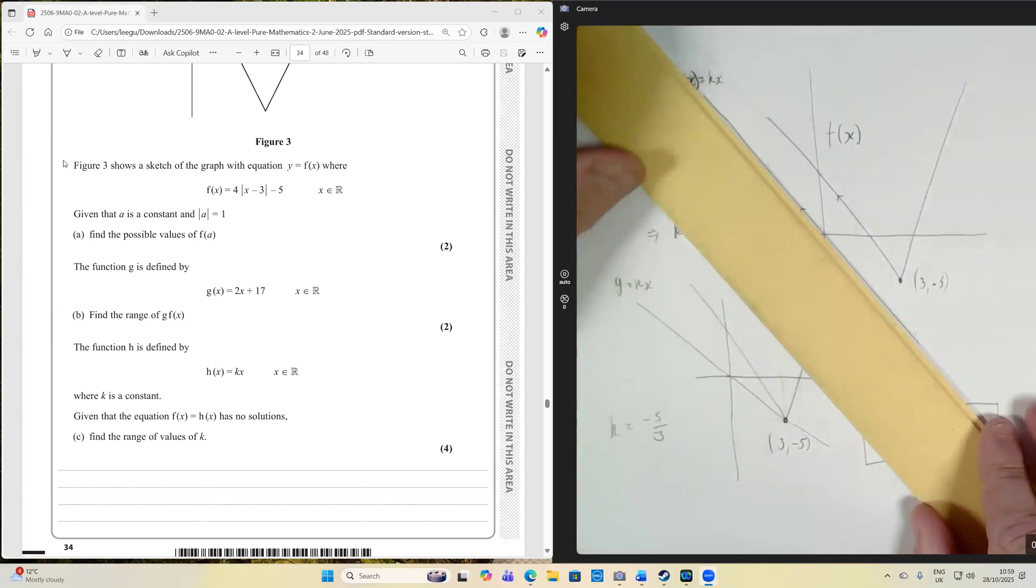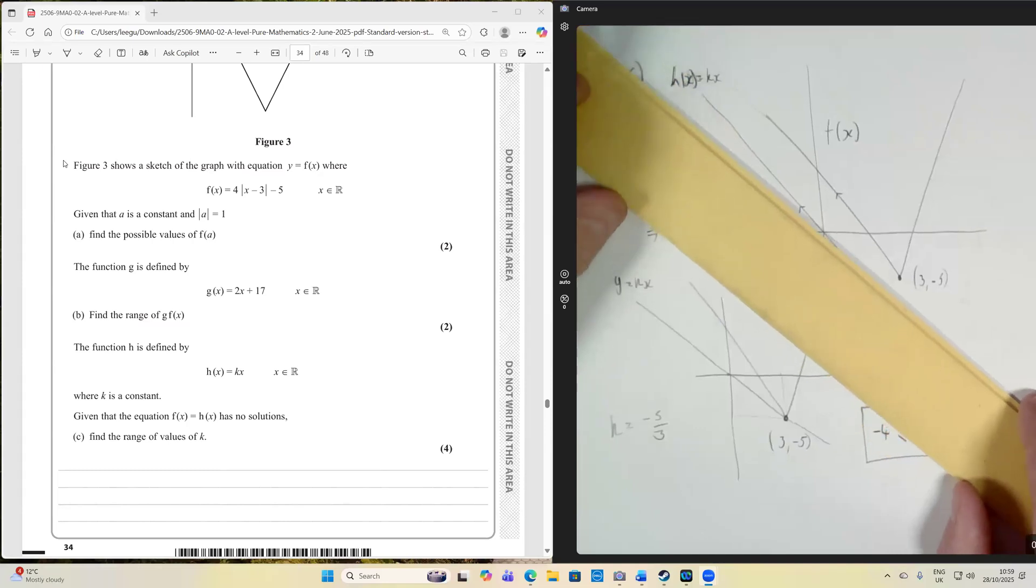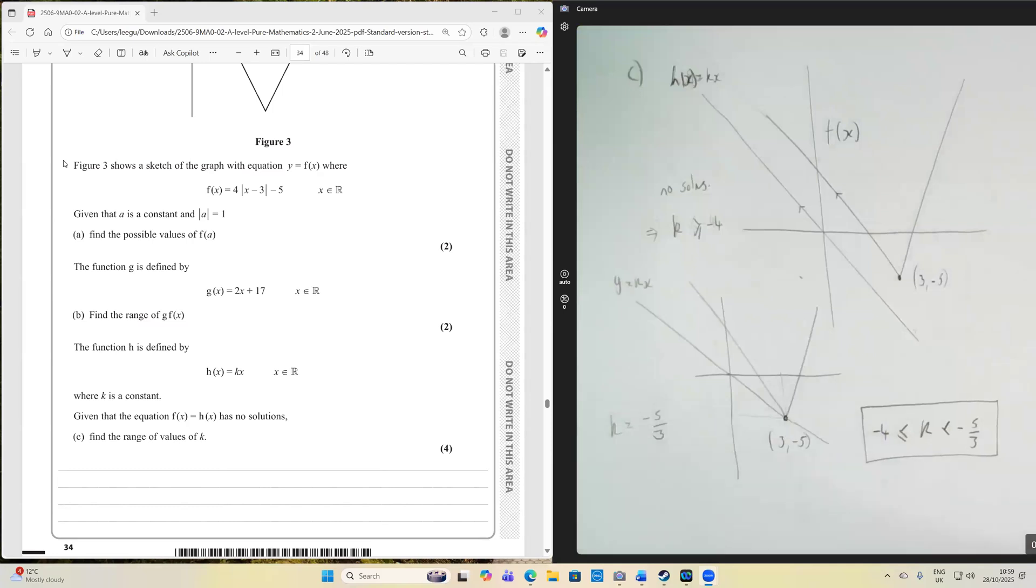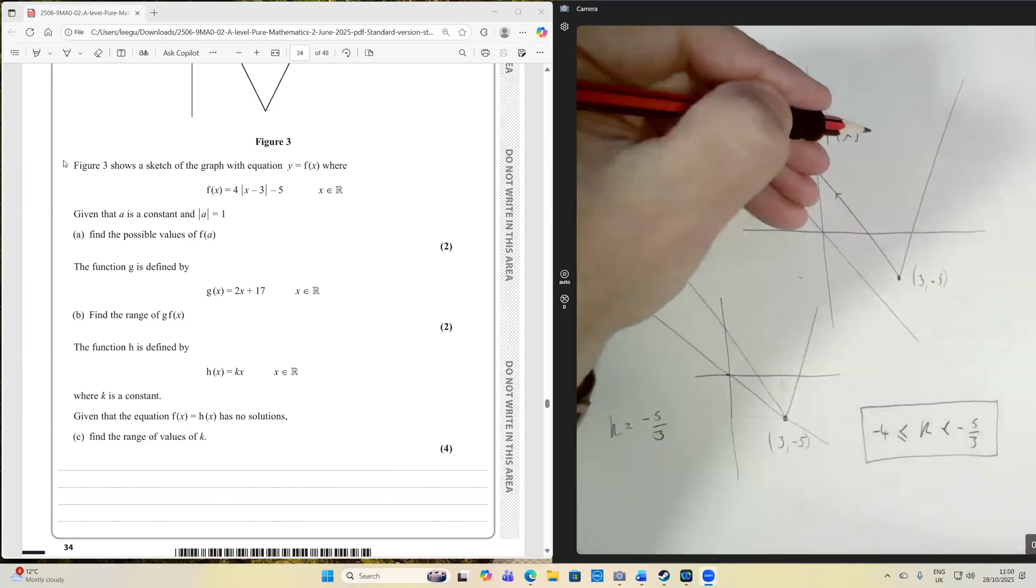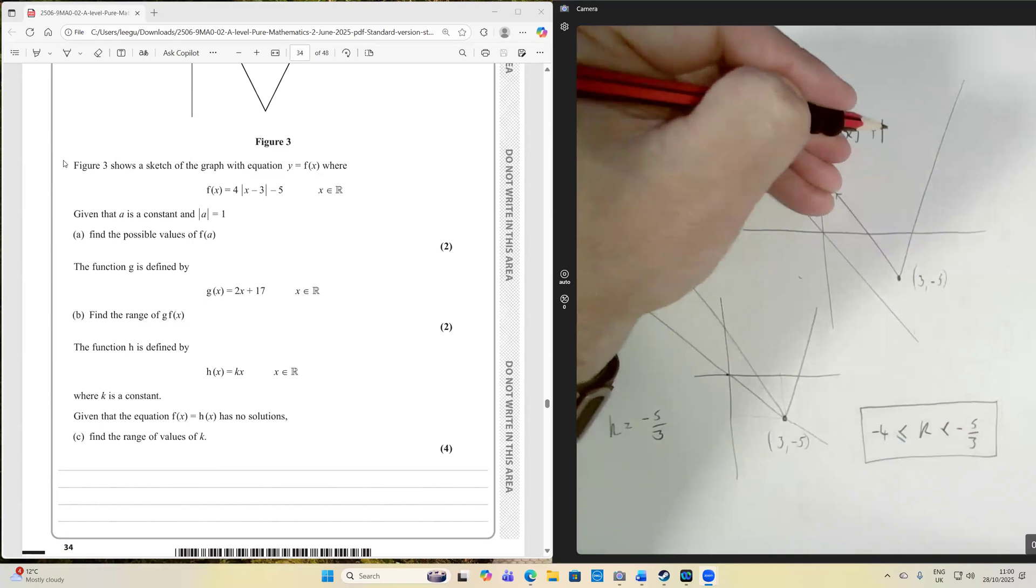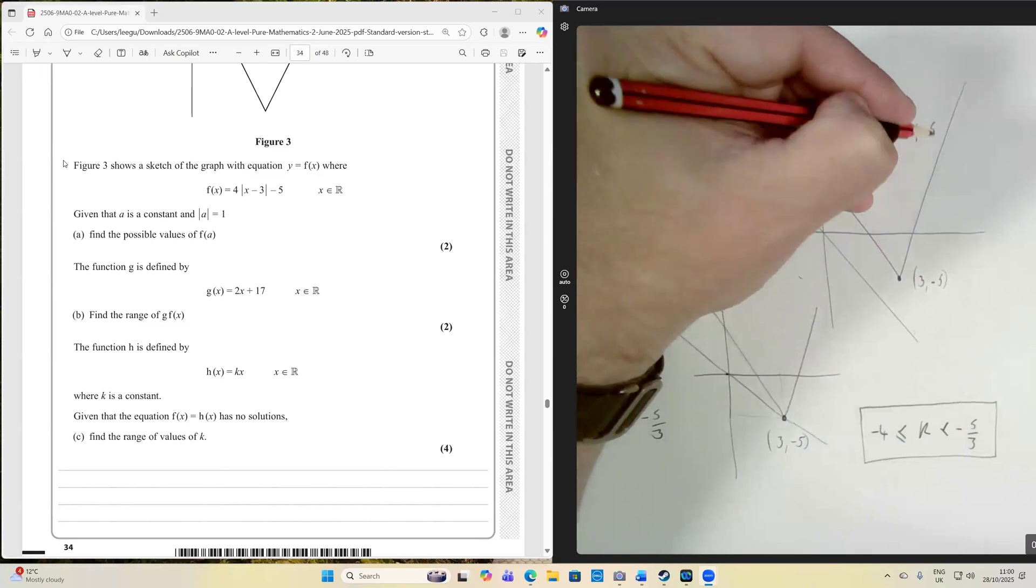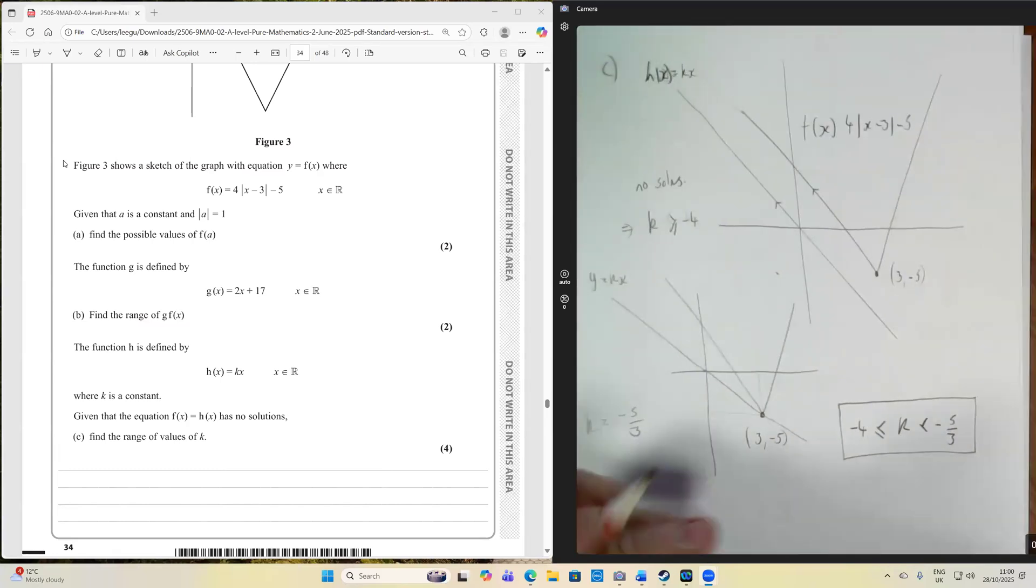Now, as the gradient changes like this, now this is what's confusing. This is actually the gradient is increasing. Now, let's think about what is the gradient there? Well, we know that from the graph of f of x, the equation of f of x, that we have 4 times the modulus of x minus 3 minus 5. So this has a gradient of 4, because it's a little bit like y equals mx plus c. So that's a gradient of 4.